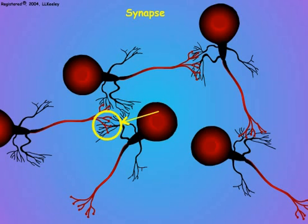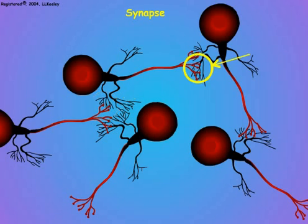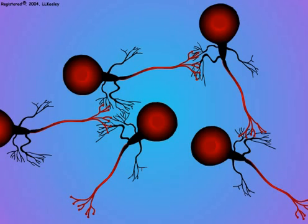The synapse is the connection between two neurons where information is transferred and interpreted. It is a major site for the toxic actions by many insecticidal chemicals. To understand how an insecticide can disrupt the nervous system, it is essential to understand how a synapse functions. Here we see a group of neurons that illustrate a simple network for the interchange of information within the nervous system. Information comes into the network and is distributed between the neurons at their synapse.